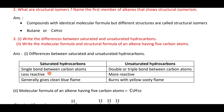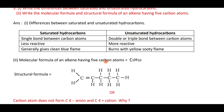Alkanes burn with a yellow sooty flame. The general formulas: alkanes CₙH₂ₙ₊₂, alkenes CₙH₂ₙ, alkynes CₙH₂ₙ₋₂. The molecular formula for an alkyne with five carbon atoms uses CₙH₂ₙ₋₂ and has a double or triple bond present.